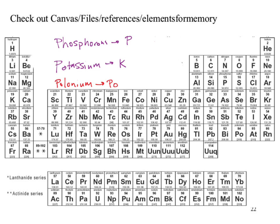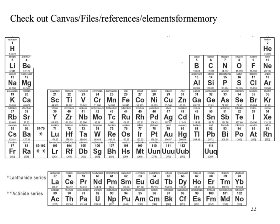I believe this is the periodic table you get on your exam. Does anybody notice anything missing compared to the periodic tables on the wall? The bold line to separate metals from non-metals isn't there. So I will try to go back through and bold that staircase line in so you don't have to be looking across the room.